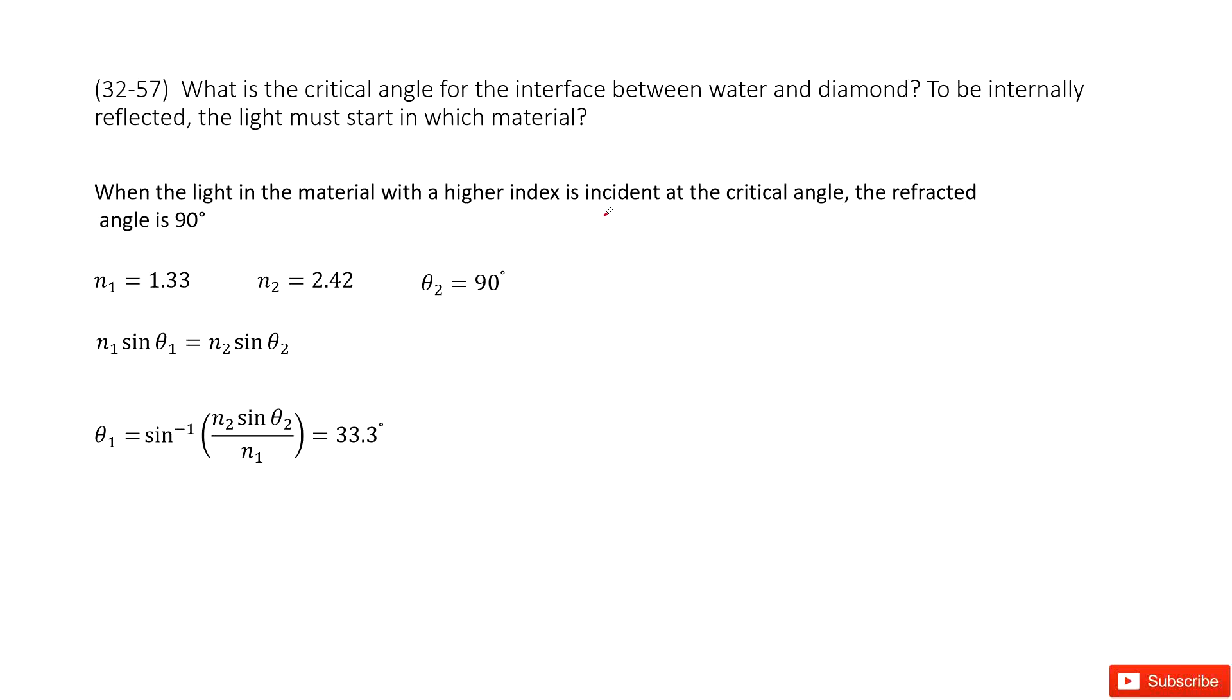Here we talk about internal reflection, right? We know the light travels from N1, which is water, to the second medium, diamond N2.